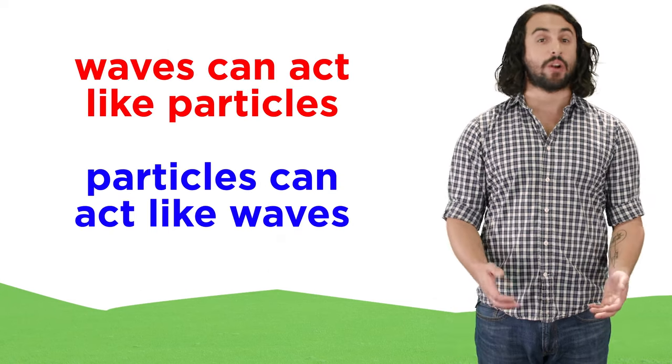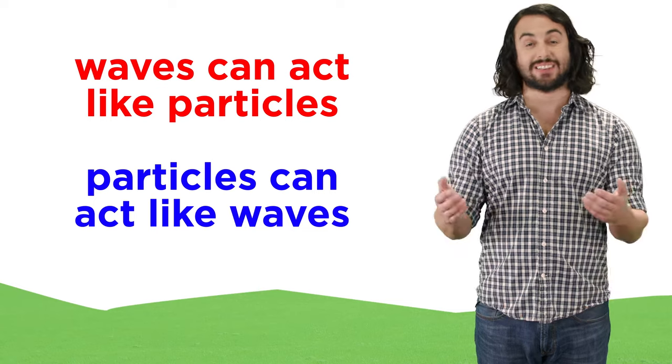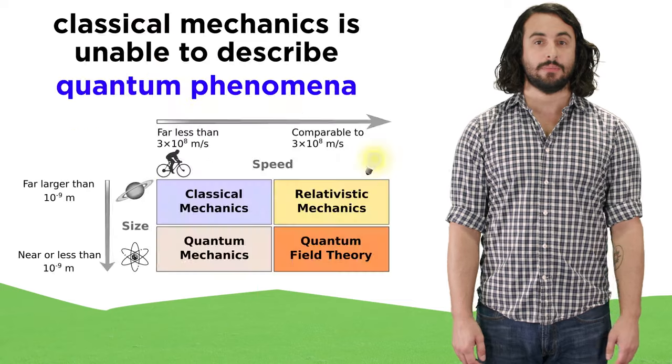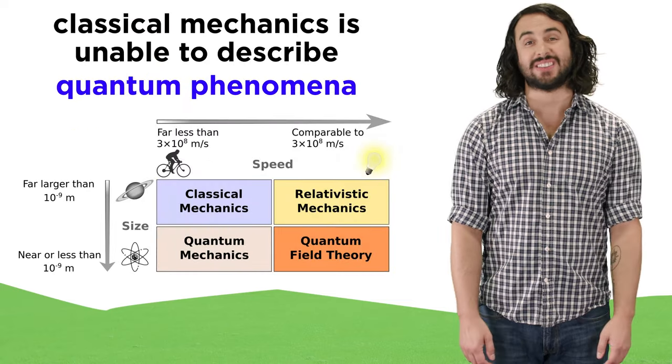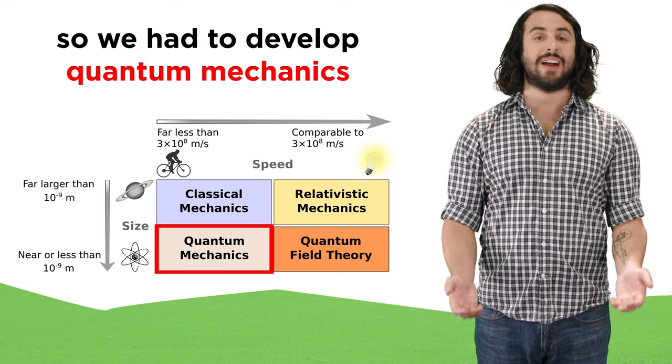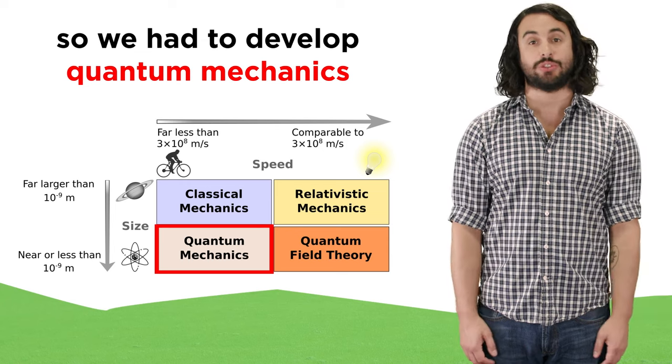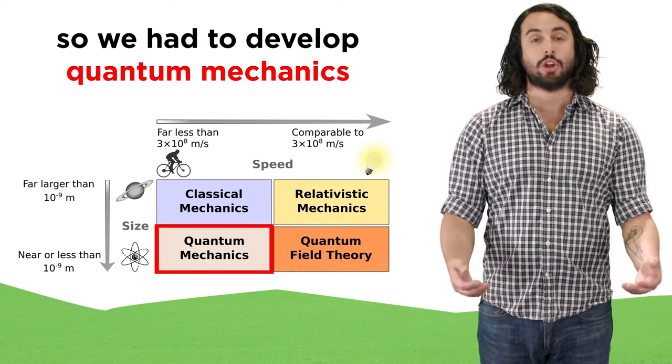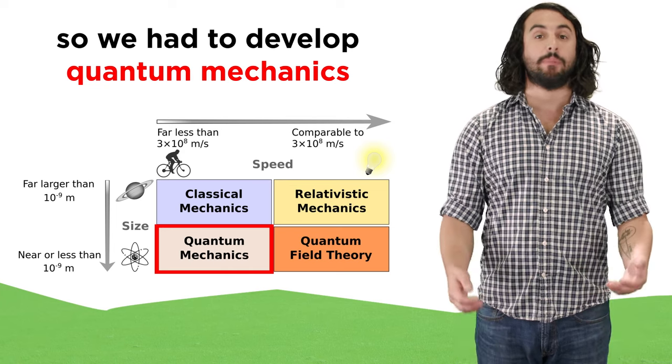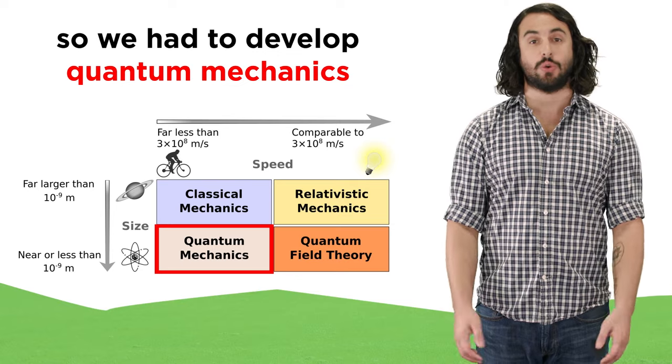Waves can act like particles, and particles can act like waves, whether we are talking about light or matter. Because Newtonian mechanics is unable to fully describe this kind of behavior, we had to develop an entirely new field to do so, and that field is called quantum mechanics. This and the figures that contributed to its development will be the focus of the next few tutorials.